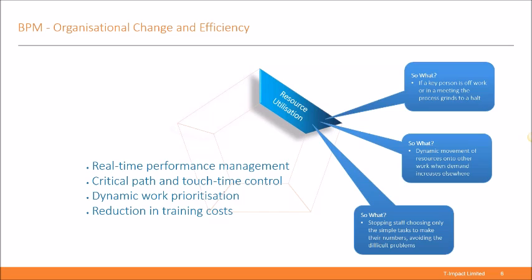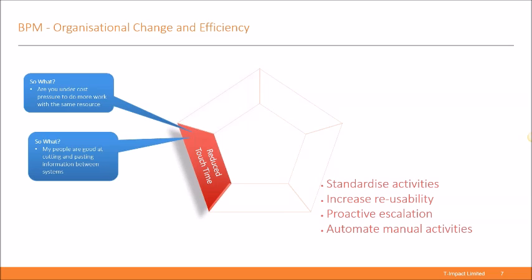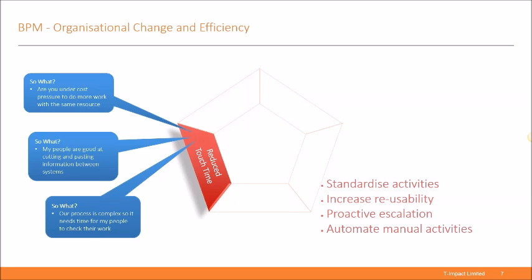The next benefit is reduced touch time — the amount of time your staff take with tasks. A BPM solution can bring in standardization, improve the reusability of work, and automate manual activities. Do you find yourself under cost pressure to do more work with the same resources? Something we hear a lot is that staff are great at cutting and pasting between systems — but they really don't need to be doing that at all. It's a waste of time when you can automate those processes. We can ensure data is collected right first time and build in business rules to make complex decisions without manual intervention.